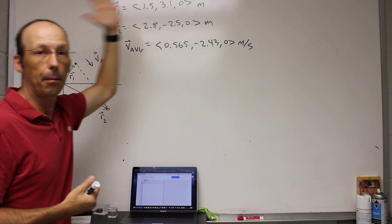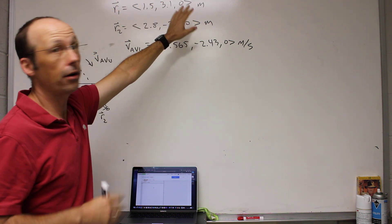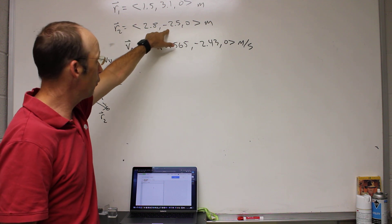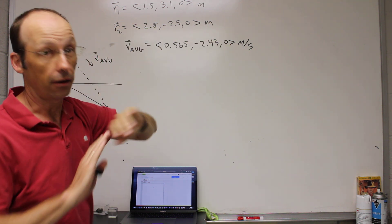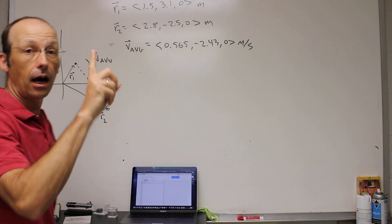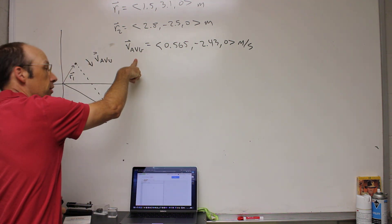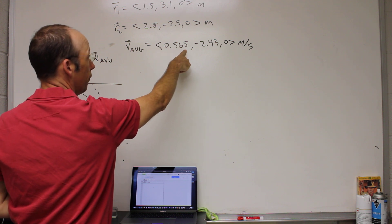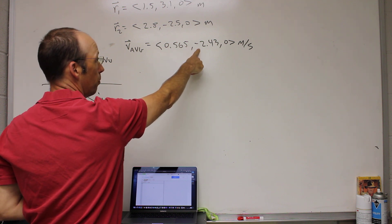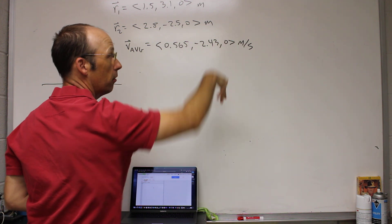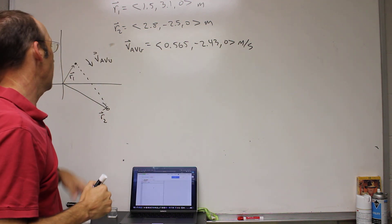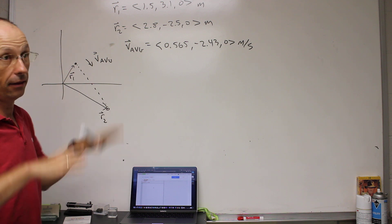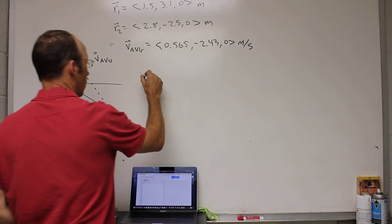So suppose I have an object that starts at position one and it moves down to position two. And I know these two positions. R1, I pick some values: 1.5, 3.1, 0 meters, it doesn't move in the z direction. R2 is 2.8, negative 2.5, 0 meters.